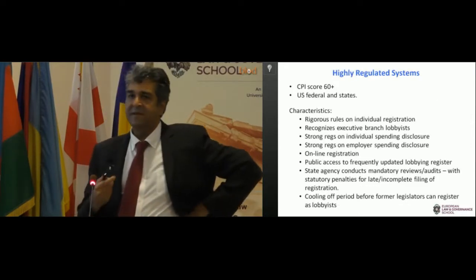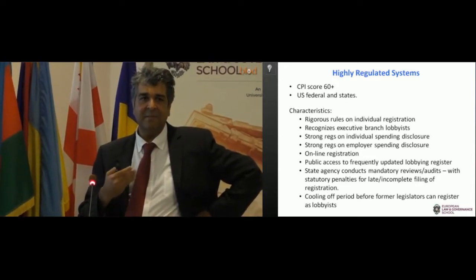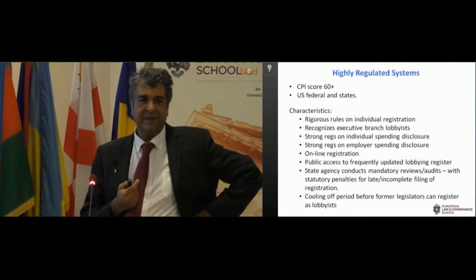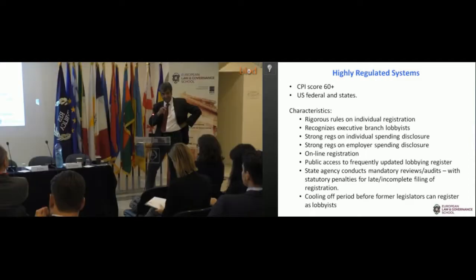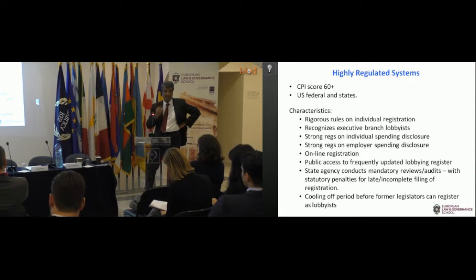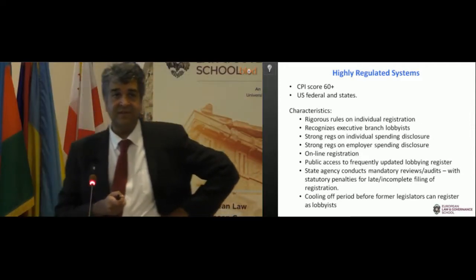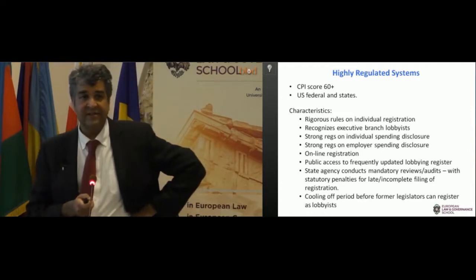The important thing to note about the difference between high-regulated systems and medium ones is that high systems ask for financial spending disclosures. Even though the Joint Transparency Register has that characteristic, on other categories it scores relatively low compared to the U.S. federal system, so it's not a highly regulated system. The highly regulated systems in the United States all have very extensive spending disclosure requirements — lobbyists have to clearly file itemized receipts in most cases, particularly Washington State, which is the strongest regulated system.